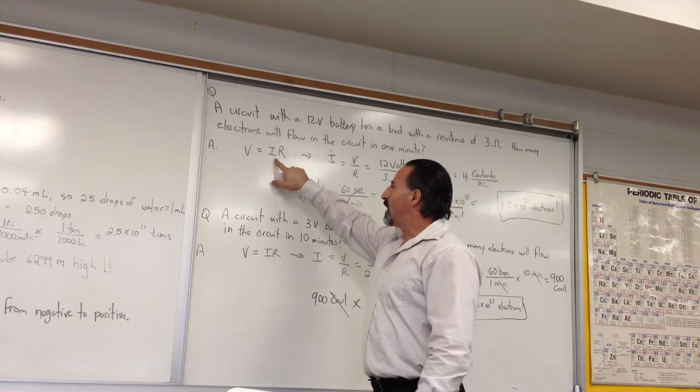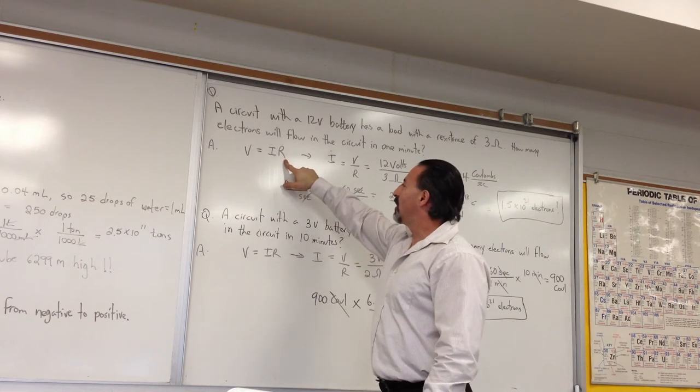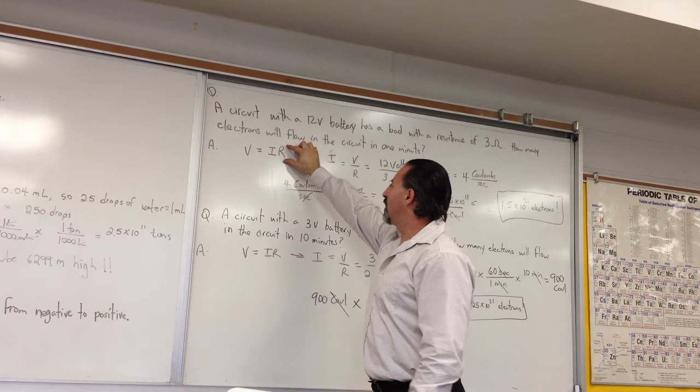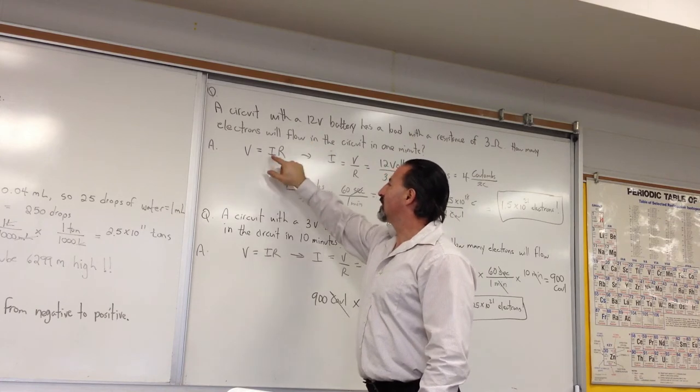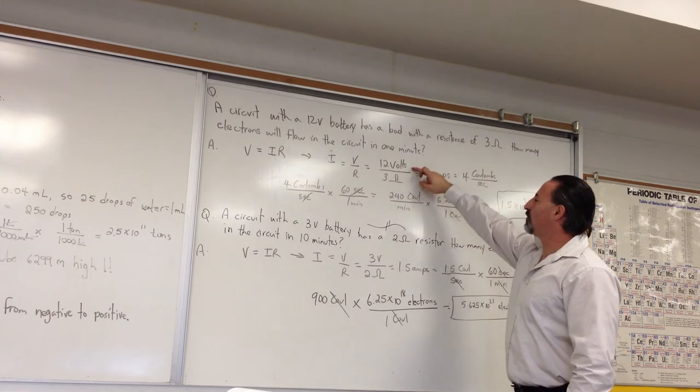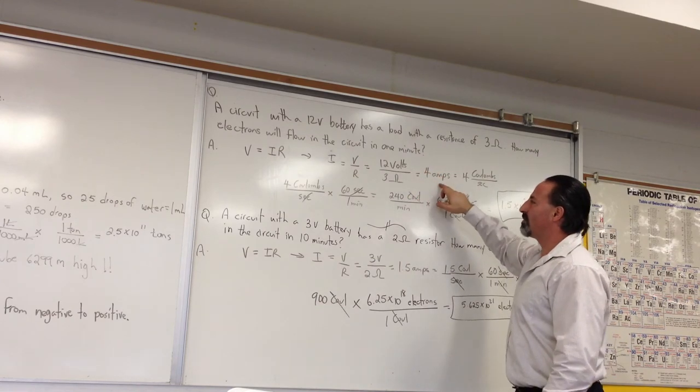where V stands for the voltage, I stands for the current, and R is the resistance. We rearrange the equation, we transpose the R, we put it under the V, so we get that I is equal to V over R. And, 12 volts over 3 ohms gives you 4 amps.